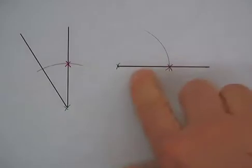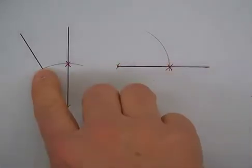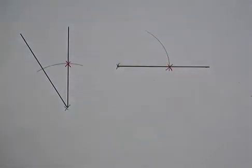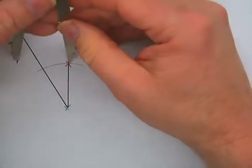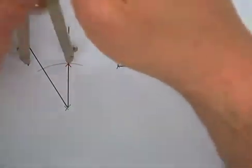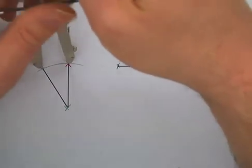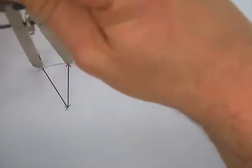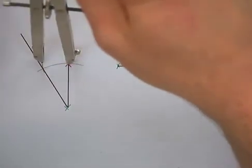Now what I need to do is I need to find or create this point that I have over here, but I need to create it on here. So what I'm going to do is this time, I'm going to put my needle on the red point, and then I'm going to close it up until it goes right through my other point right there.